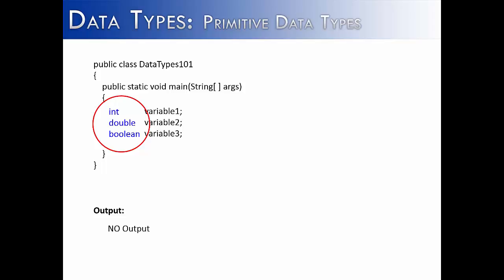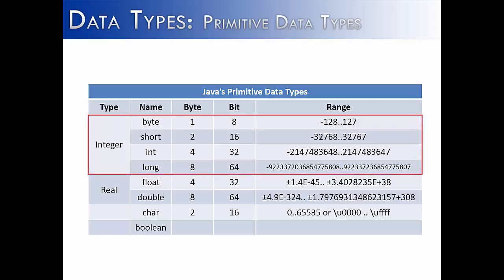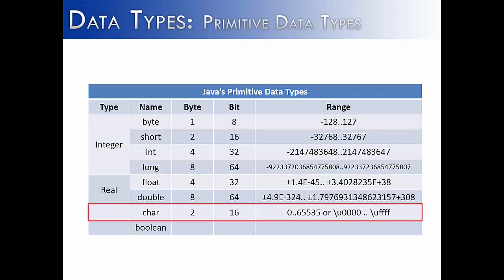They all hold certain types of values and allow for certain types of data inside of them. The first data type, and what this video is about, is going to be about integers, and there are four types of integers inside of Java's primitive data types. The second set are real numbers, the third are characters, and the last are boolean values.